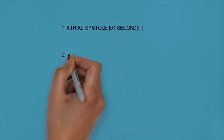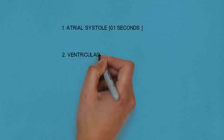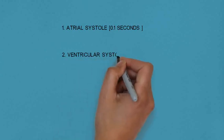The second phase is ventricular systole. It lasts about 0.3 seconds. Both ventricles contract and due to this pressure, blood will go to the pulmonary trunk and aorta.